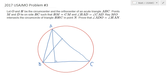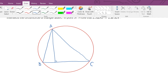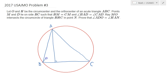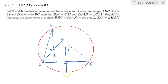The orthocenter H is somewhere here, and the circumcenter O — if we call the midpoint of BC as M, which is given in the question — we draw a perpendicular bisector, so the circumcenter is probably somewhere here. Now the point D is on the angle bisector from A, and the angle bisector hits the circumcircle at the midpoint of arc BC. Let's call this point P.